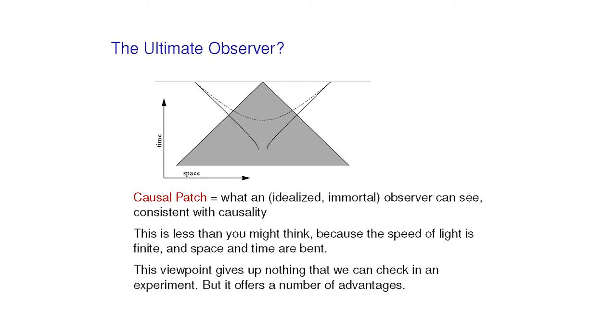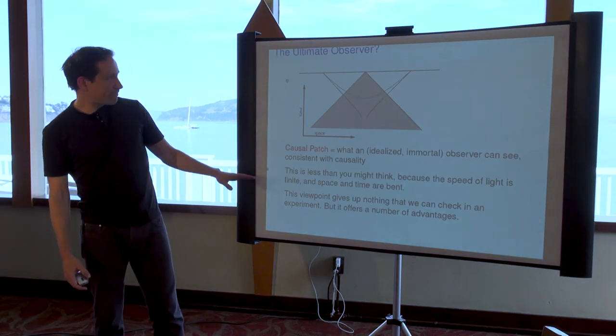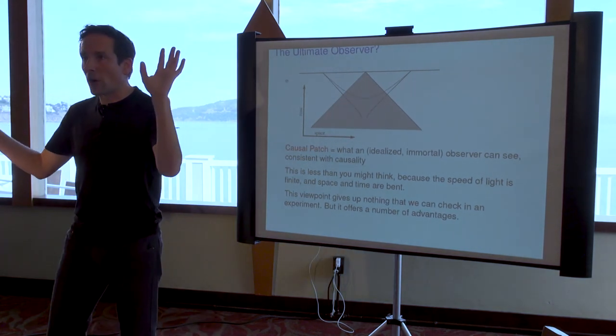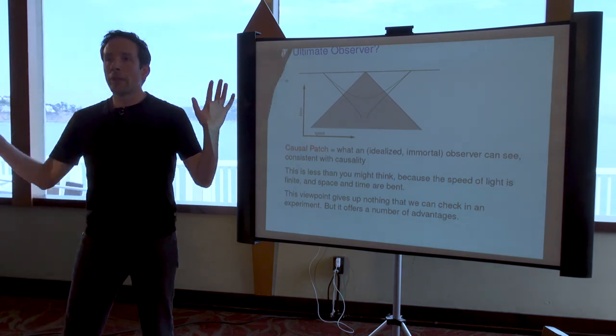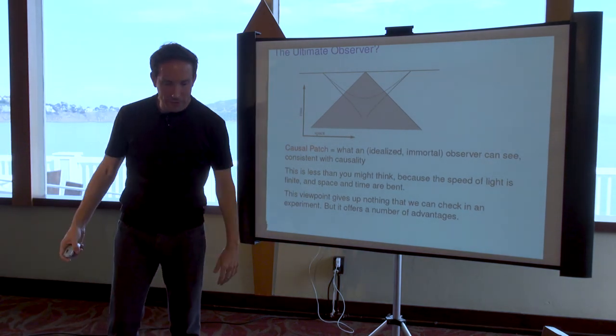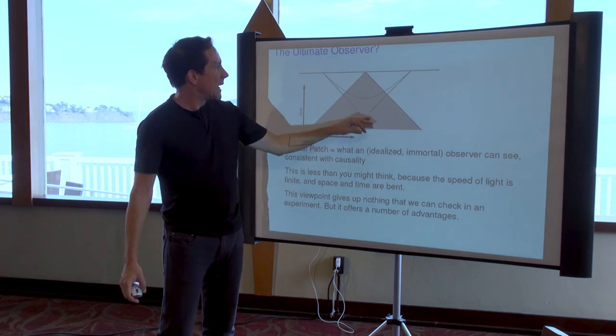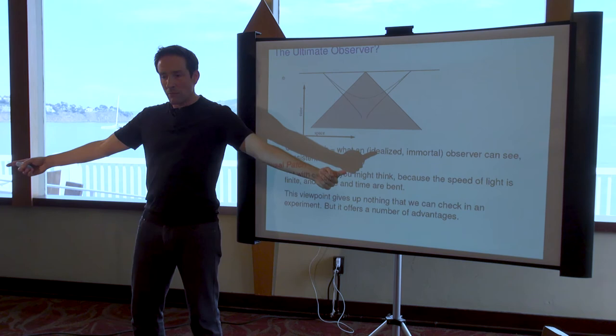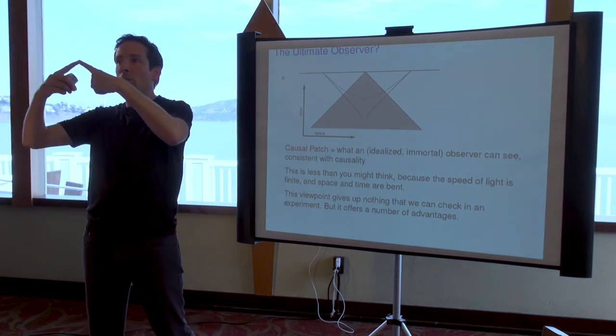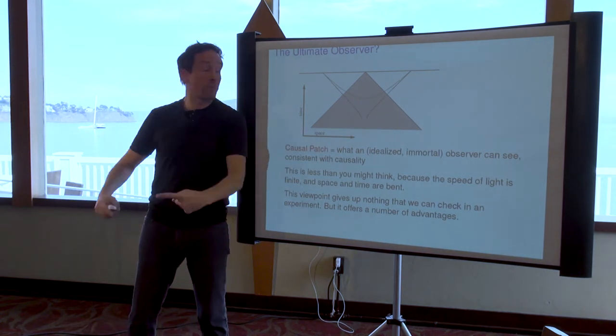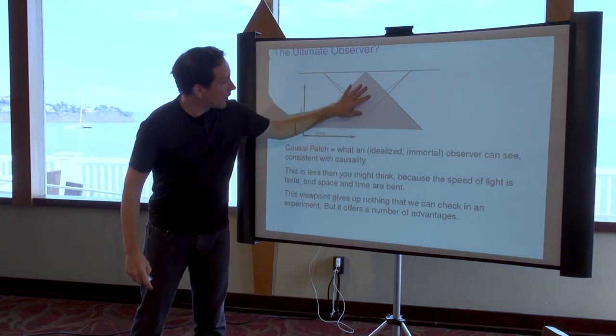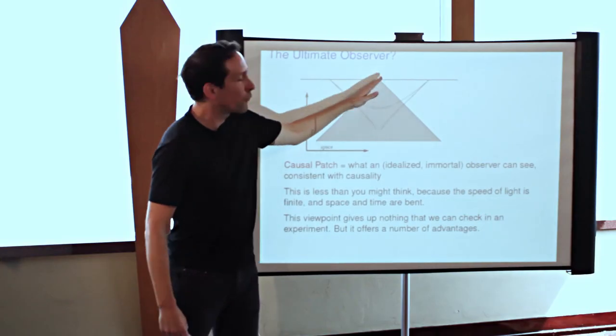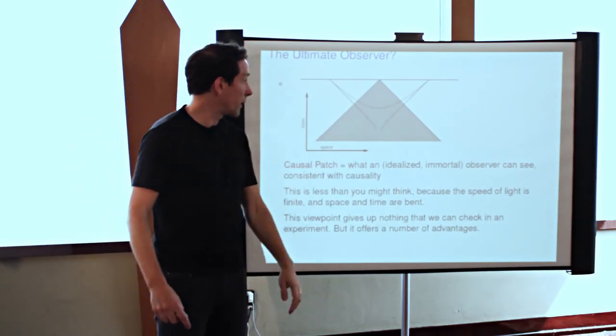So here's a minor attempt using cosmology to recover at least an approximate notion of things that objectively happen. This notion is called the causal patch. And it's what an observer could see if the observer lives infinitely long, or at least until the universe ends. So we're not going to constrain the observer by boring human lifetimes or things like that. The only thing that we're going to constrain is that the observer gets to see only things that can reach the observer traveling as fast as the speed of light. So we don't get to violate the laws of physics.